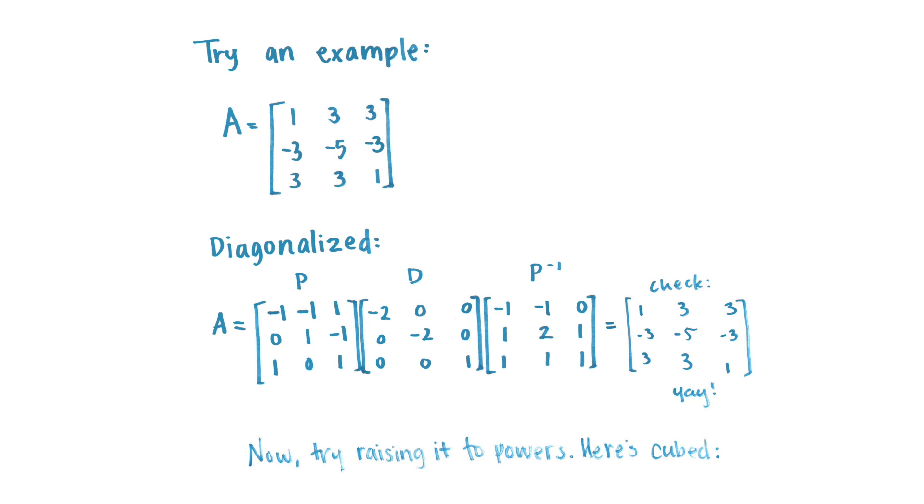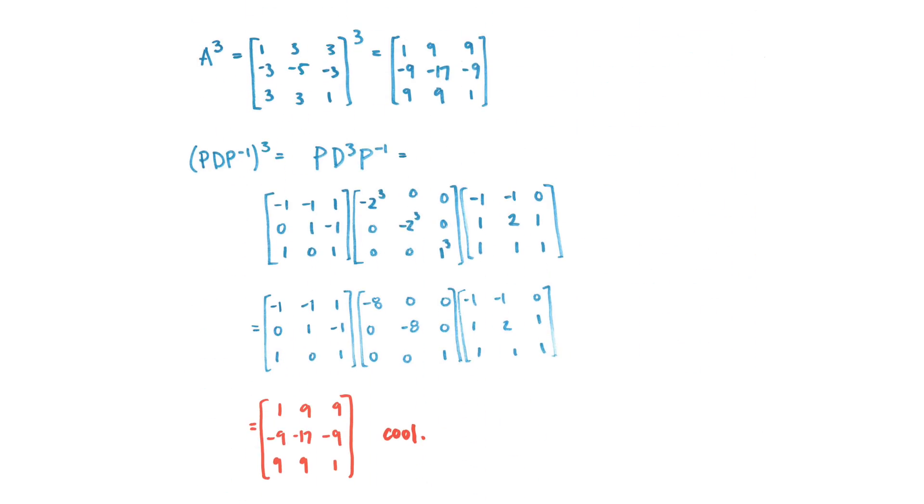So just for some practice, try an example with a diagonalization. Here's a matrix you can try and check with our work here. So take a moment to do that. You can pause the video if you need to, and see if you get what we got. And now try raising that matrix to a power of 3 or to other powers and seeing how A cubed, if you multiply it out, is the same thing as doing P d cubed P inverse. And so if you would like to try a few, you can pause the video and try that.